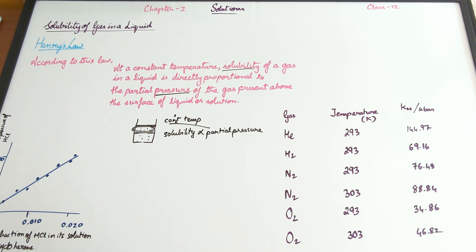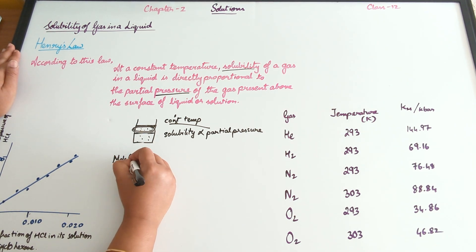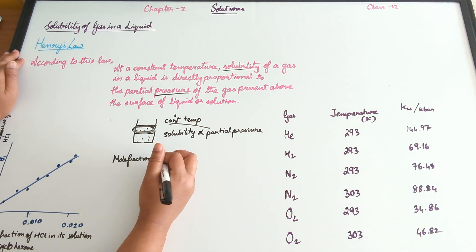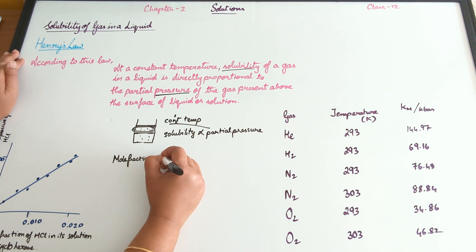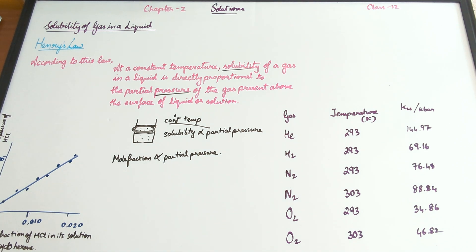This can also be stated as: the partial pressure of the gas in the vapor phase is directly proportional to the mole fraction of the gas in the solution. This is because we are considering mole fraction as the measure of solubility. So from that, we get that mole fraction is proportional to the partial pressure of the gas above it. This was actually initially concluded independently by Dalton.